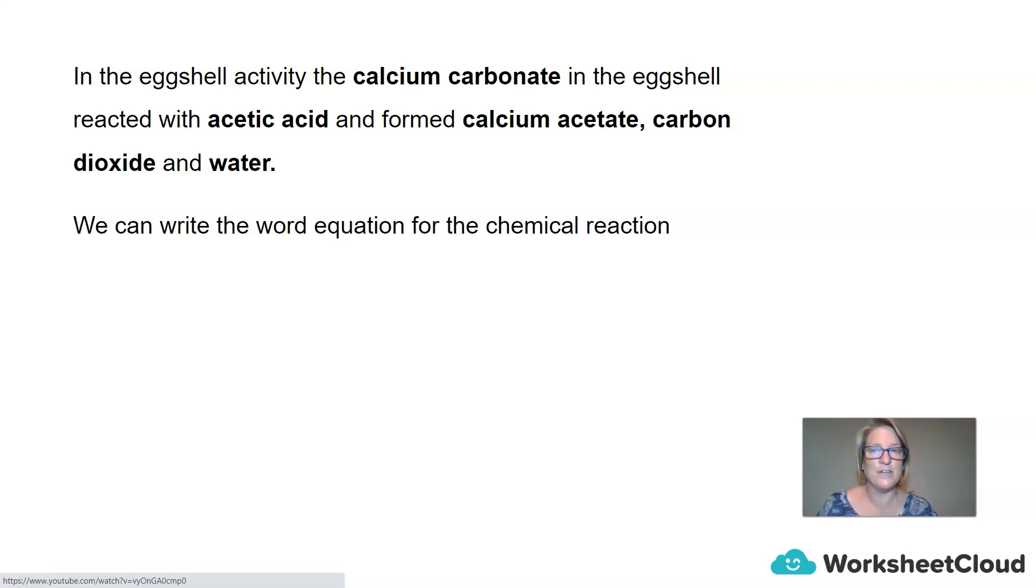I would like you to pause the video now and write the word equation for this chemical reaction. So we have the egg shell plus the vinegar. Those are our reactants. That's what we had at the beginning of the experiment. Then it underwent a chemical reaction which took a few days and we were left with calcium acetate, which is the brownie stuff that you might have found floating on the surface, carbon dioxide, which was the bubbles, and water.